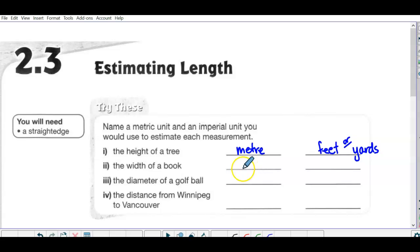Width of a book then in metric that for sure would be centimeters. I'll just use the abbreviation. Width of a book likely inches. Diameter of a golf ball, it's small so would be you could use centimeters or millimeters and inches for imperial because there isn't a smaller unit, it would be a fraction, probably a couple inches and a fraction. Distance from Winnipeg to Vancouver, that's a long distance so that would be kilometers or miles.